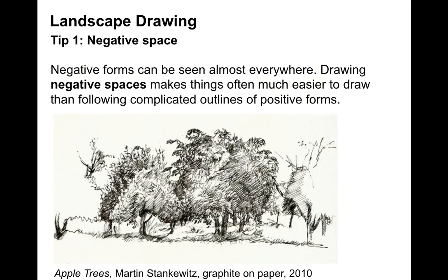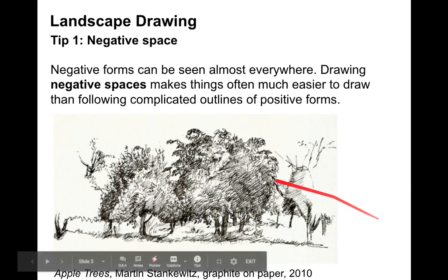Here are some tips. Negative space: look for the negative space around things. You can see in the tree on the left, for example, things aren't completely drawn and things are left blank.